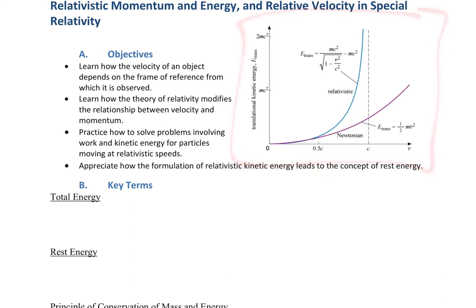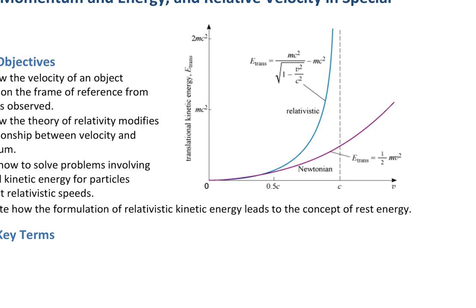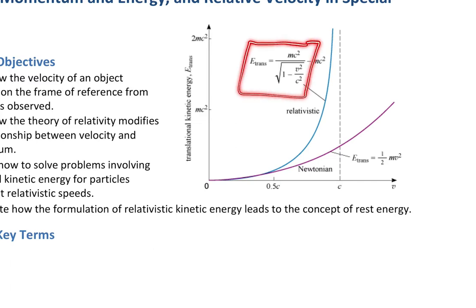Here is a graph with translational kinetic energy on the vertical axis graphed against velocity, with the speed of light marked. Newtonian mechanics gives us a parabola that crosses right across the speed of light, but we know that's impossible — we cannot have velocities greater than the speed of light. Relativity corrects for that. The functional relationship between velocity and kinetic energy has to have a vertical asymptote, so kinetic energy approaches infinity as the velocity gets closer and closer to the speed of light.